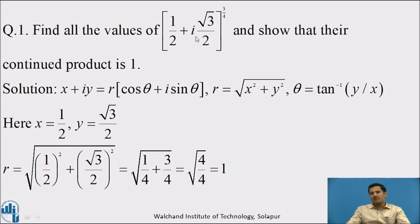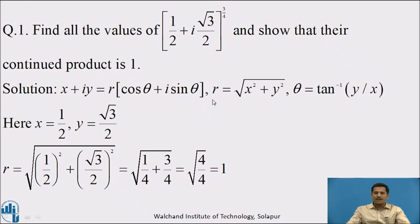Here we have given the complex number in Cartesian form, so our first step is to express this Cartesian form complex number into polar form. We know that any complex number x + iy can be written in polar form as r(cos θ + i·sin θ), where r = √(x² + y²) and θ = tan⁻¹(y/x). Comparing with x + iy, we get x = 1/2 and y = √3/2.